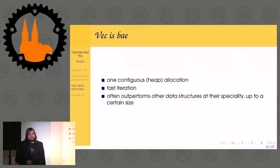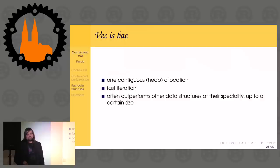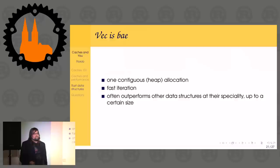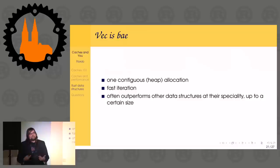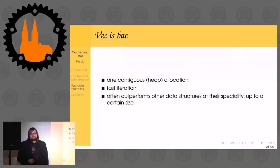A quick rundown of typical Rust data structures from a cache perspective. Vec is from a cache point of view amazing — it's one contiguous allocation in heap memory, no gaps. Linear reads are what CPUs are great at, and you're good iterating forwards or backwards. Vecs are so good for caches that they often outperform other data structures in tasks those structures are specifically designed for, at least up to a certain number of elements, just because cache efficiency often trumps algorithmic advantages.